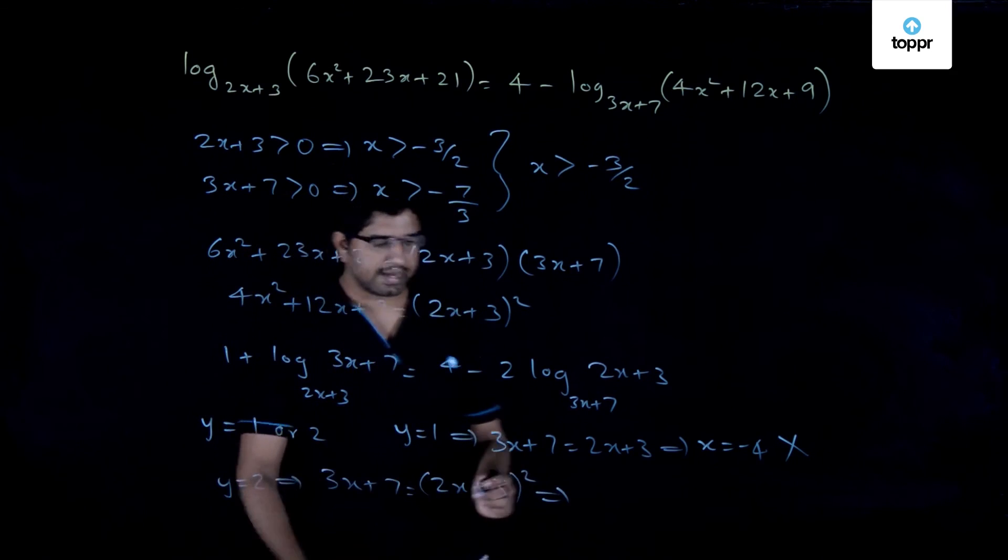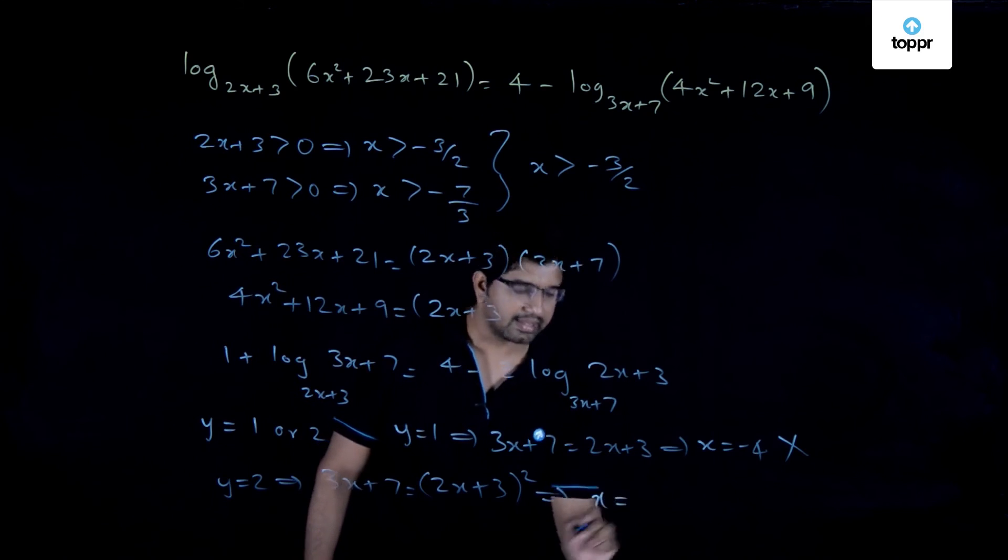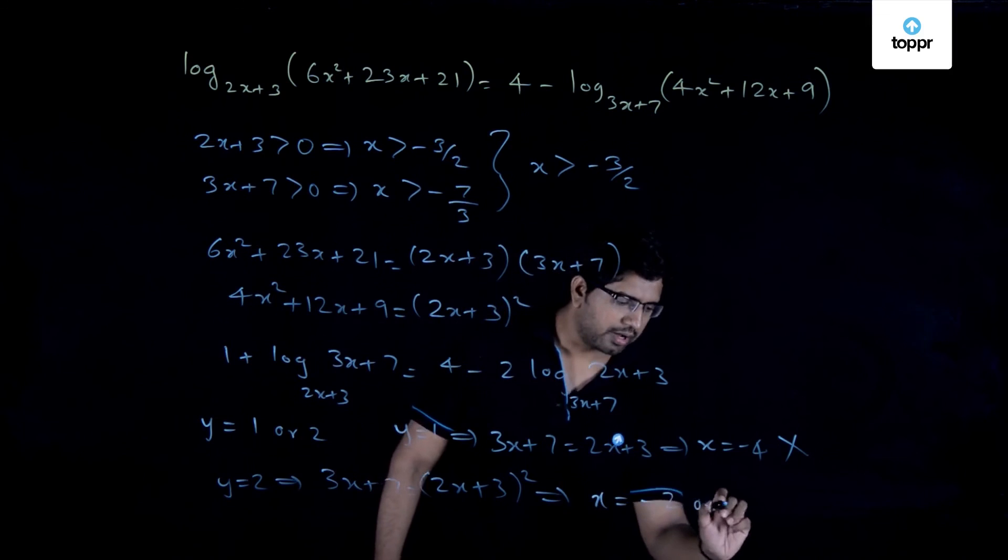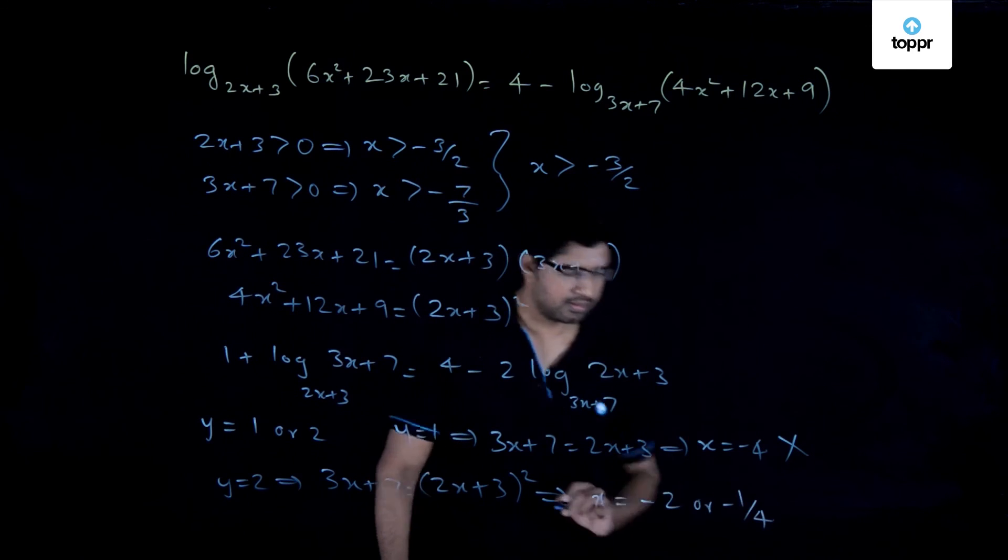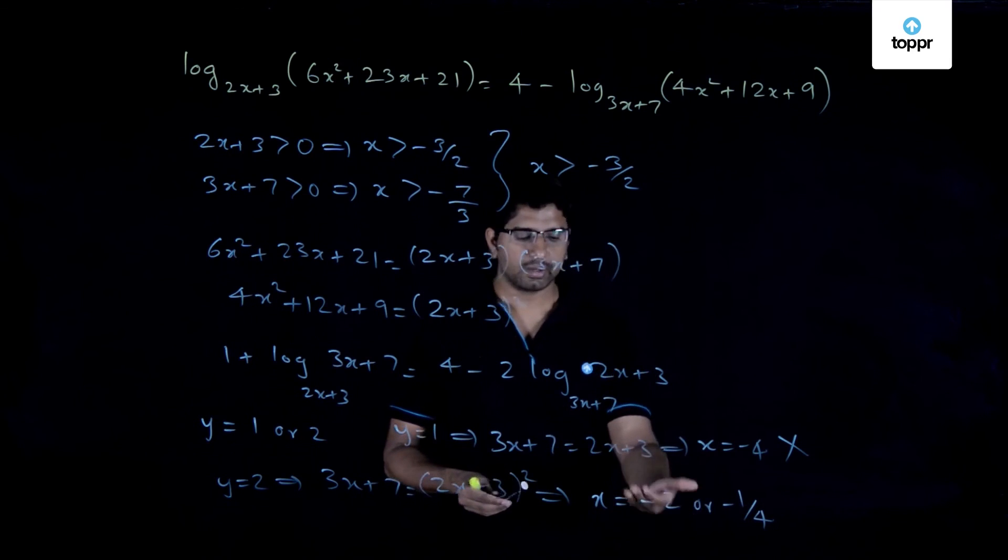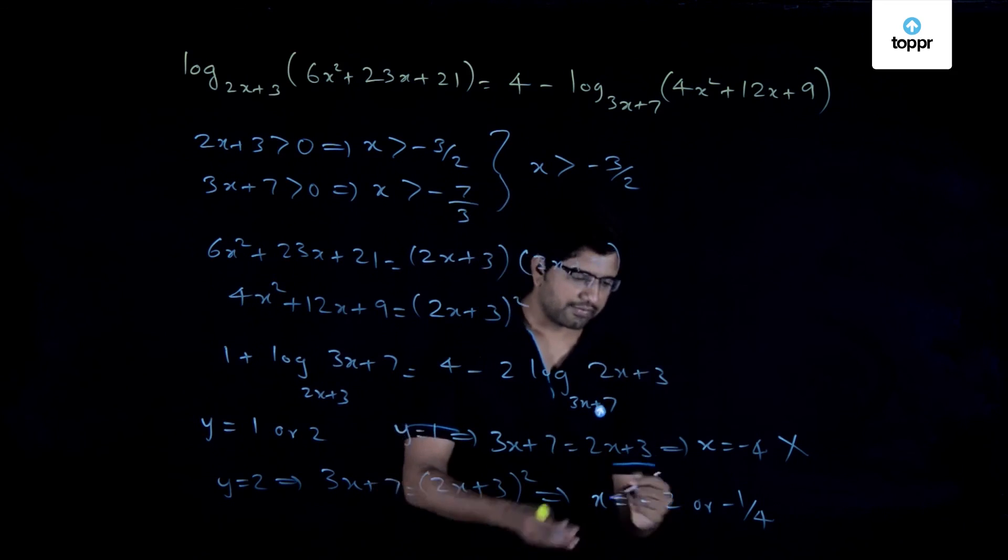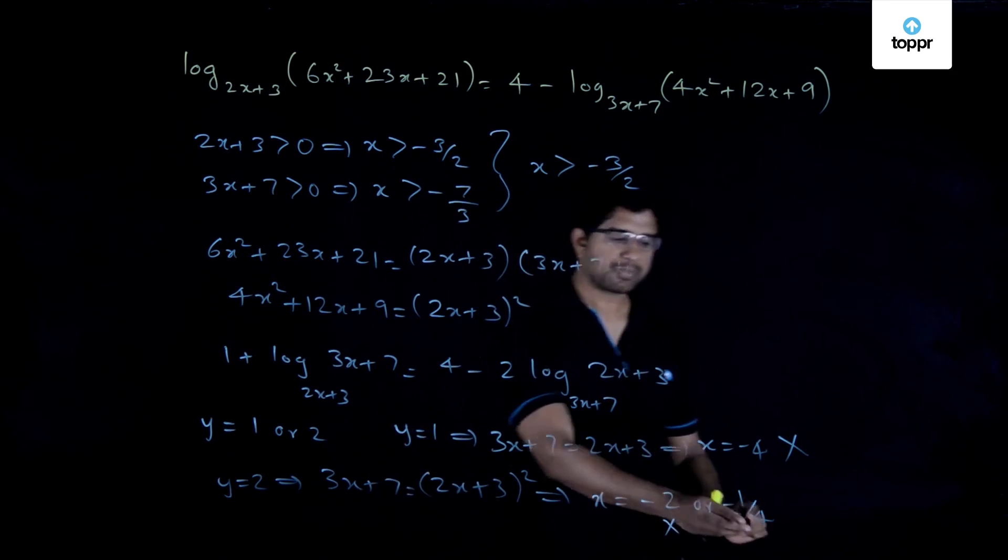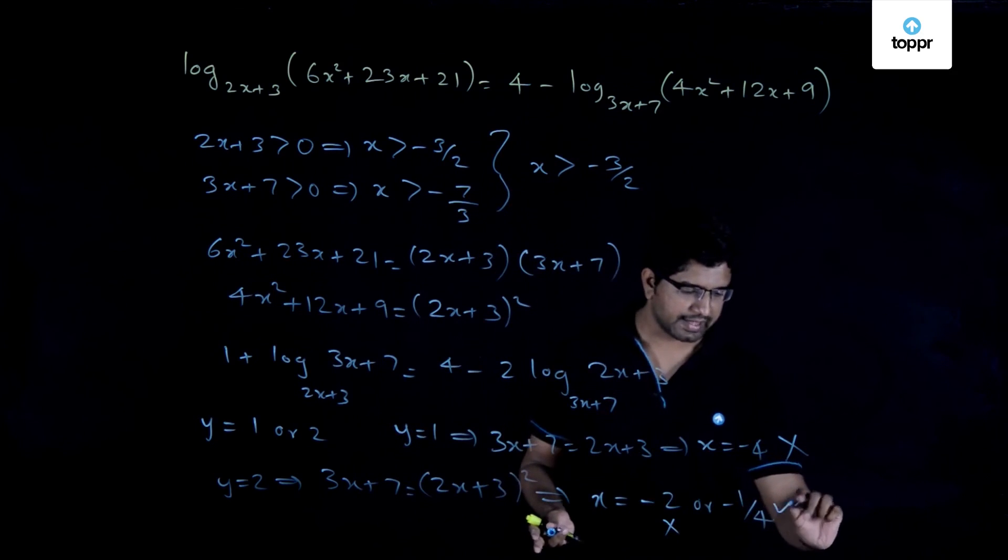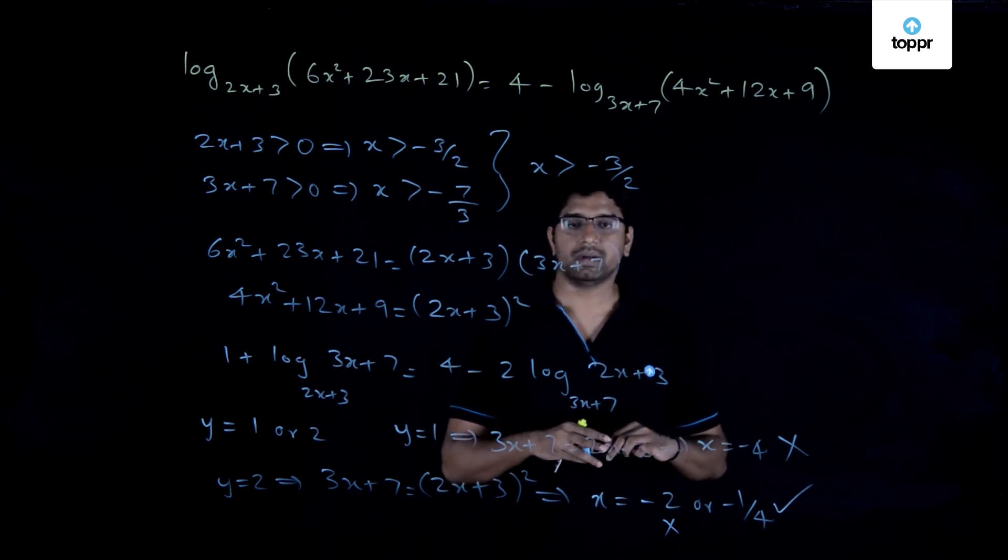Again you will get a quadratic equation. And the values you will obtain is that either x is equal to -2 or -1/4. Now again, which among these values are admissible? If you get x is equal to -2, it is less than -3/2, and therefore you can discard this value. Again, -1/4 is possible because it satisfies all these properties, and therefore the correct solution for the given problem is x is equal to -1/4.